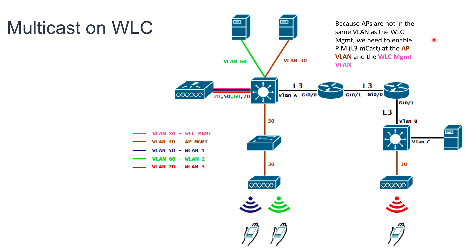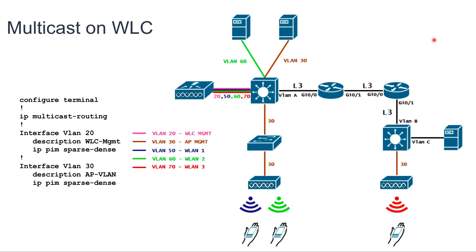This means we need to enable PIM on every interface in the path between the access points and the controller. For example, on the switch on the left, the Multicast configuration will be as follows: configure Multicast routing, then enable it on Interface VLAN 20, which is the controller management VLAN, and then Interface VLAN 30, which is the access point management VLAN.